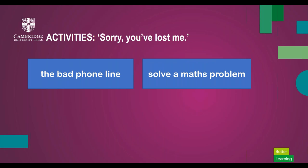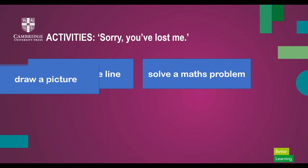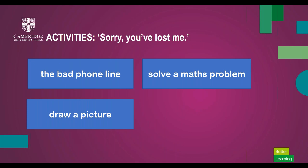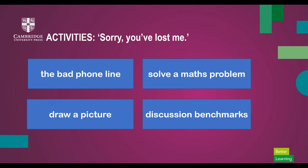Solve a maths problem: in pairs, one student reads the problem while the other does the maths. 'Start with 5, multiply by 4, divide that by 2, subtract 3, then multiply by 10, then take half of that — what do you get? Are you still with me?' Draw a picture: pairs sit back to back, one describes a picture while the other reproduces it as accurately as possible. Discussion benchmarks: in small groups, students have a discussion about a class topic and must each check for understanding at least once, ask for clarification twice, and explain something in different words once.